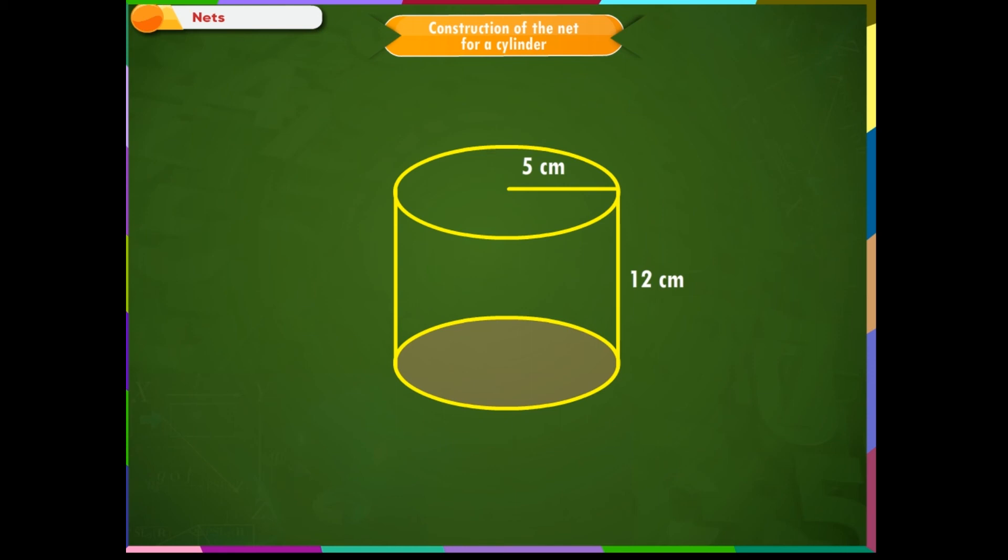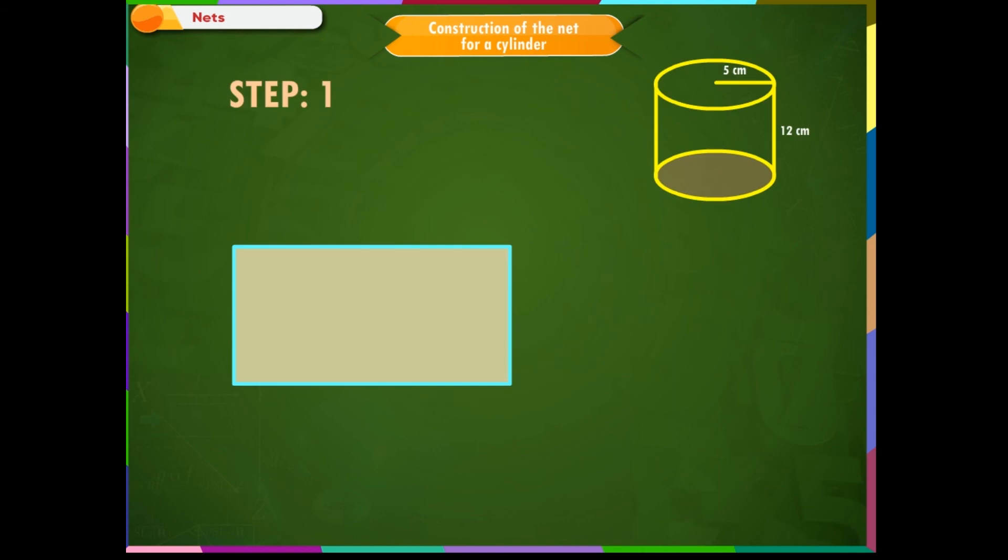If we mentally unfold a cylinder and see, we can observe that a cylinder is made up of a rectangle and two circles. Step 1: Let us draw a rectangle of length 12 cm and breadth 5 cm.